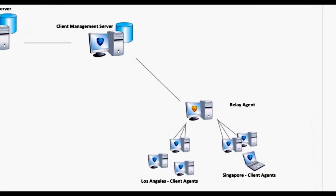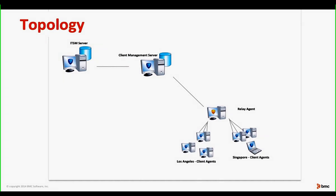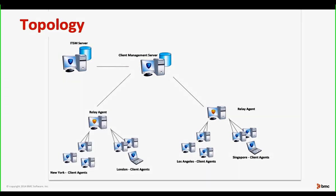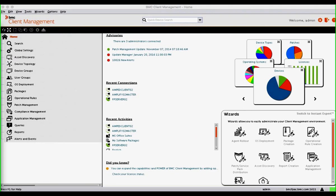Our client management server is the master server where we maintain all the records and information provided to administrators and help desk users. I've brought up a relay agent here — our relay agent talks to two different offices, the Los Angeles office and the Singapore office. The relay agent holds things like patches and commonly deployed applications, so that work is done by the relay agent and not the master server. It's set up in a flexible topology that can grow as your company grows, easily adding another relay agent for London, New York, or remote laptops through the DMZ.